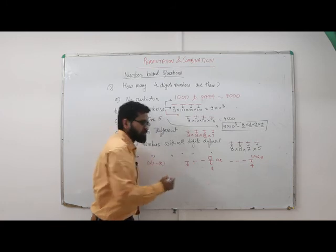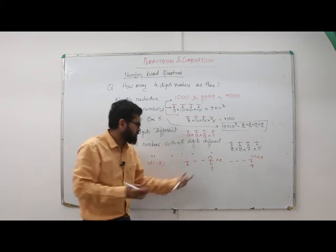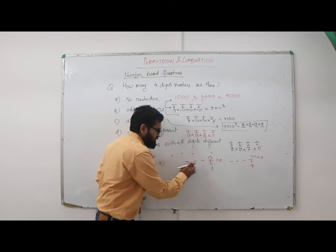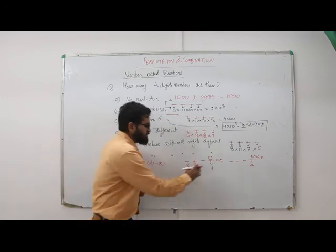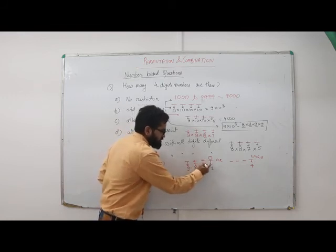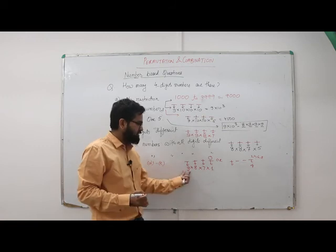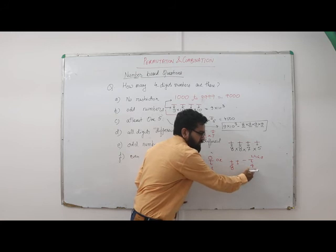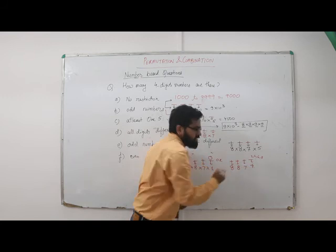Case 1 — units place is 0: thousands place choices are 9 (digits 1–9, zero is already used), hundreds place is 8, tens place is 7. Case 2 — units place is 2, 4, 6, or 8: thousands place has one choice fewer than 9, so 8 choices; hundreds place is 8; tens place is 7. We add these two sub-results to get the final answer.